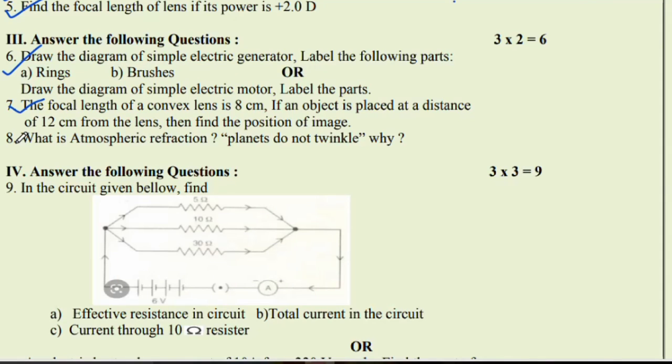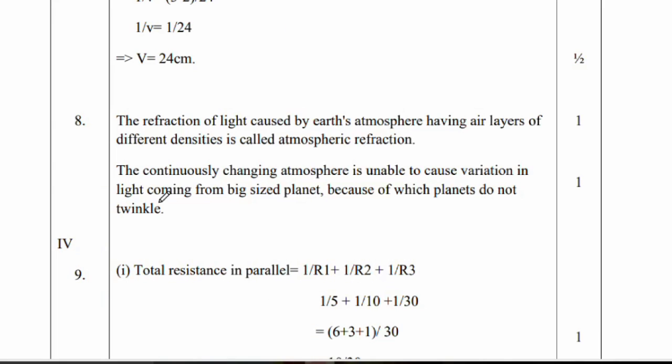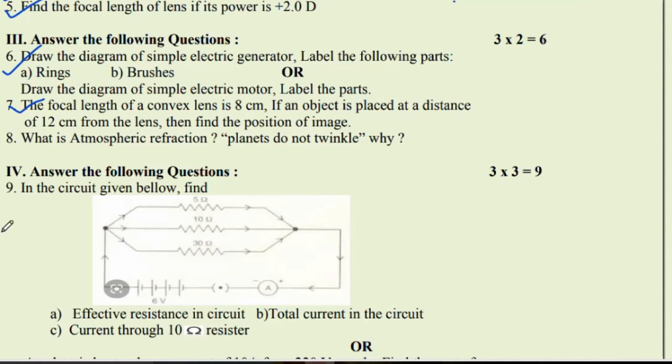Question number 8: What is atmospheric refraction? Planets do not twinkle, why? First, the refraction of light caused by earth atmosphere having air layers of different densities is called the atmospheric refraction. And the continuous changing atmosphere is unable to cause variation in the light coming from big sized planet because of which planet do not twinkle.